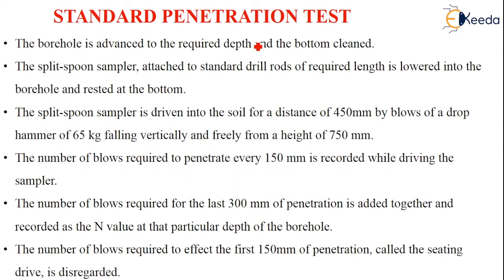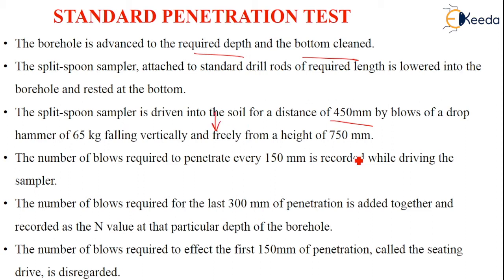Coming to the first test, the Standard Penetration Test: a borehole is advanced to a required depth and the bottom is cleaned where you are interested to take the soil sample. Then a split spoon sampler attached to standard drill rods of required length is lowered carefully into the borehole and rested at the bottom. This split spoon sampler is driven into the soil for a distance of 450 mm by blows of a drop hammer weighing 65 kg, falling vertically and freely from a height of 750 mm.